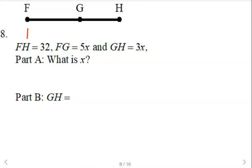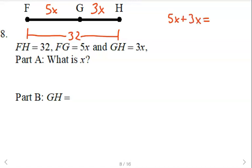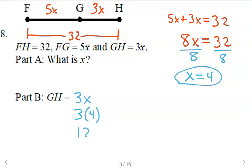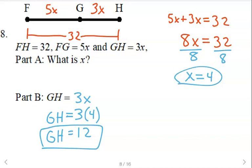We have an expression for FH: 32. FG is 5x and GH is 3x. So we can say 5x plus 3x equals 32 — that's the segment addition postulate. Combine like terms: 5x plus 3x is 8x, then divide both sides by 8, so x equals 4. For part B, find GH: GH is 3x, so replace x with 4 and multiply — GH is 12. FH was 32; GH is 3 times 4 is 12. FG is 5 times 4 is 20.